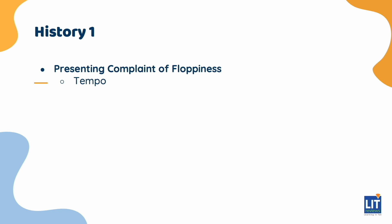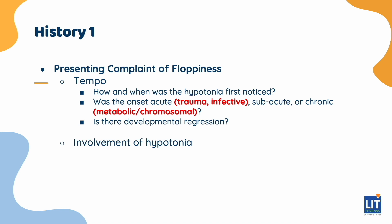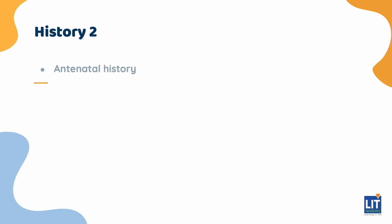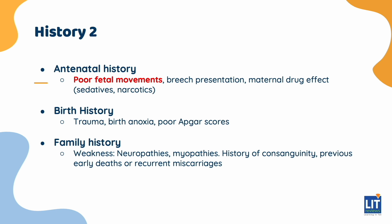Always ask in the history: when was the hypotonia first noticed? Is it of new onset? Importantly, is there any developmental regression? Is the involvement equal in the truncal regions as in the limbs? Remember to take a thorough developmental history. In the antenatal history, ask about poor fetal movements, breech presentation, or the use of maternal sedative drugs. Was the birth process traumatic? Was there any evidence of birth anoxia? Take a directed family history asking about weakness and check for parental consanguinity, especially when suspecting autosomal recessive inheritance. Ask about any previous early deaths or recurrent miscarriages.